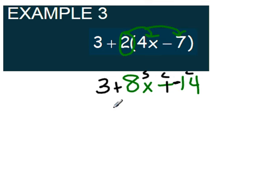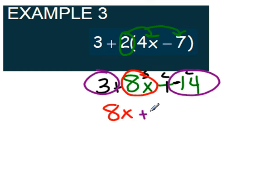After that I'm going to find my variable. Here is just an x and I'm going to put that out front. This way I can group my constants together at the end. So I'm going to have plus 3 and plus a negative 14.